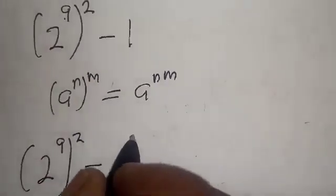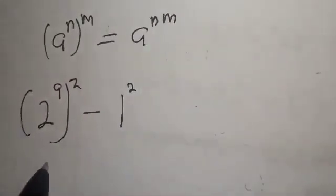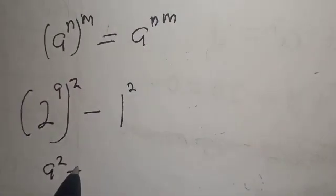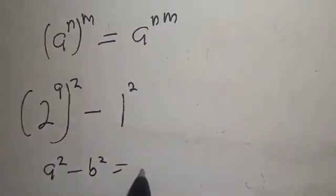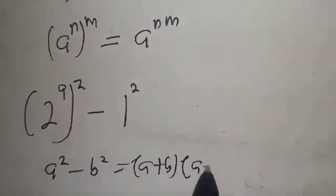this 1 is the same thing as 1 squared. Now this is difference of two squares: a squared minus b squared is equal to a plus b multiplied by a minus b.